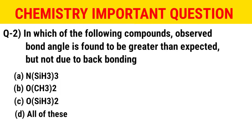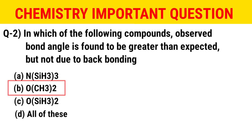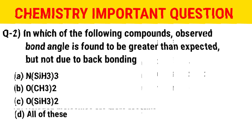The next question is: in which of the following compounds is the observed bond angle found to be greater than expected, but not due to backbonding? The correct option is option 2, that is OCH₂.